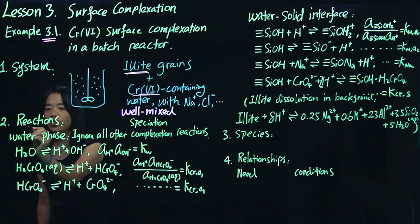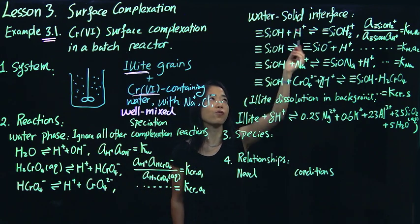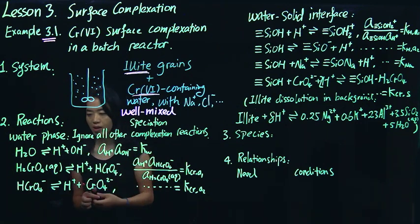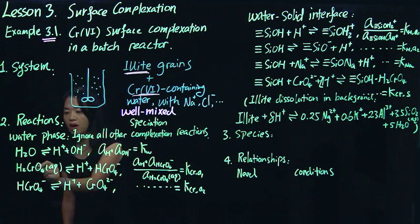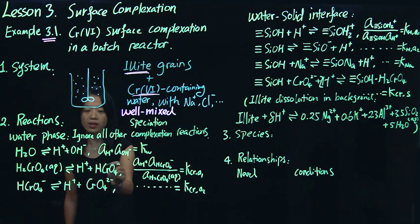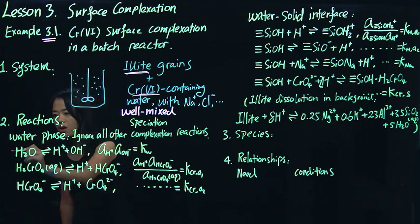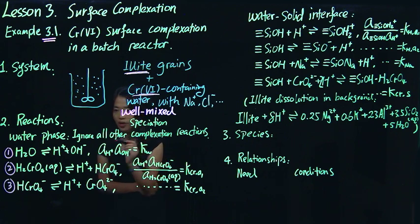Let's go over the chemistry of the system. We have reactions happening both in the water phase and at the interface of water and solid. In the water phase, we simplify the system to include the water dissociation to hydrogen ion and hydroxide. We also include chromium-related reactions — chromium-6 can have three different forms: H₂CrO₄ dissociates to H⁺ and HCrO₄⁻, which further dissociates to H⁺ and CrO₄²⁻.